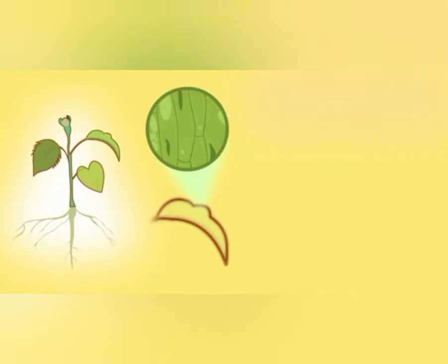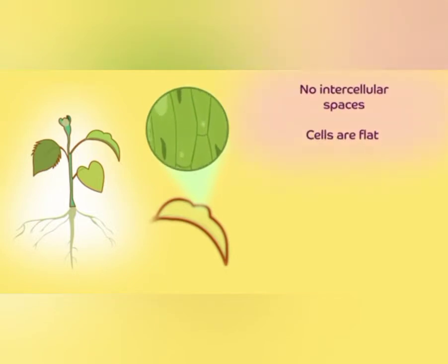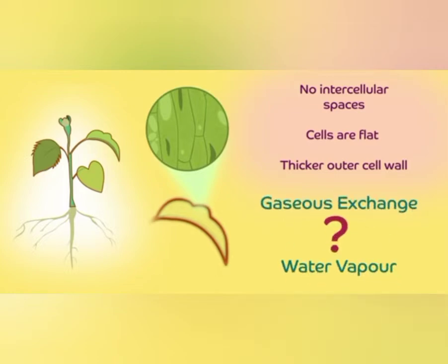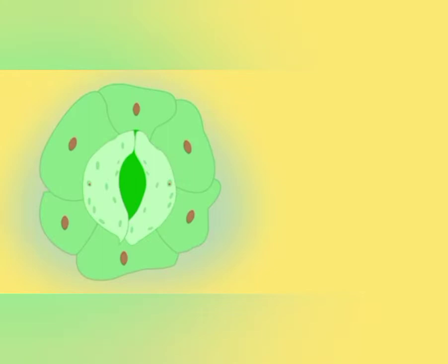Coming to the protective tissue, young plants are fully covered by a single layer of cells called epidermis, which are flat and do not have any intercellular spaces between them. They are like a covering for the whole plant. If the plant is fully covered, how does gaseous exchange and water vapor exchange happen? The epidermis has some pores occasionally on the leaves and in the stem. These pores are called stomata.